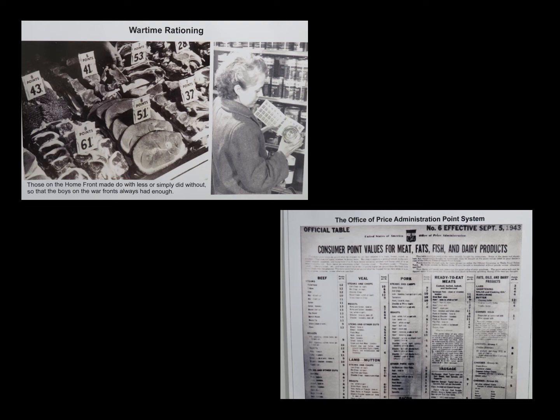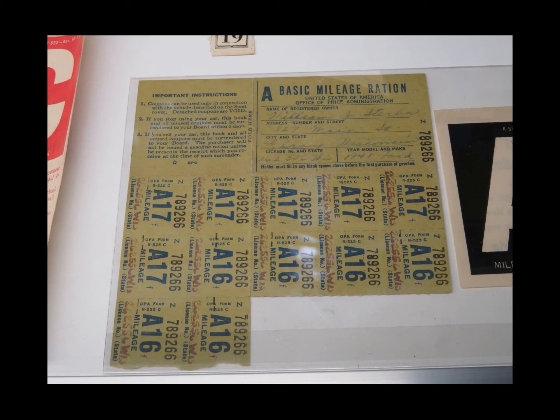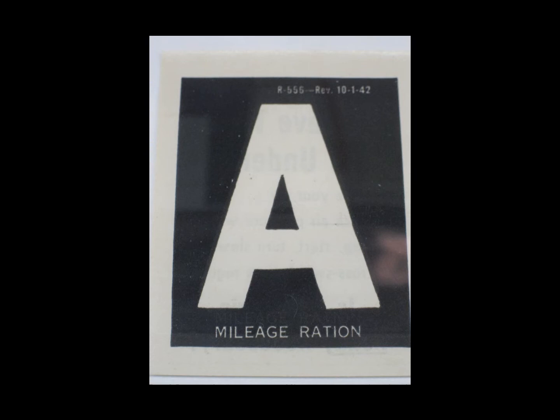To receive a gasoline ration card, a person had to certify a need for gasoline and ownership of no more than five tires. Families were authorized only one automobile. All tires in excess of five per driver were confiscated by the government because of rubber shortages. When purchasing gasoline, a driver had to display a gas ration sticker in the windshield of the car and present a gas card along with a ration book and cash. By the end of 1942, half of U.S. automobiles were issued an A-sticker that allowed four gallons of fuel per week. Keep in mind that most 1940s cars drove between 15 and 20 miles per gallon of gasoline.